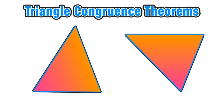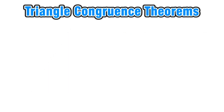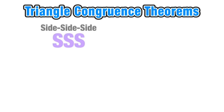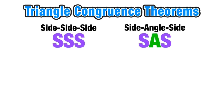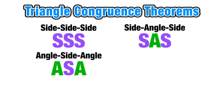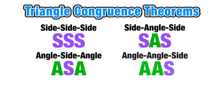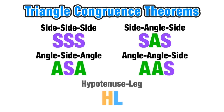This is where our theorems are going to come into play. The goal of this lesson is to help you understand why the theorems we use prove congruence and how to know which theorem to use in a particular situation. Here are the five triangle congruence theorems with their abbreviations: Side-Side-Side, Side-Angle-Side, Angle-Side-Angle, Angle-Angle-Side, and Hypotenuse-Leg. Now we're ready to explore each theorem individually.